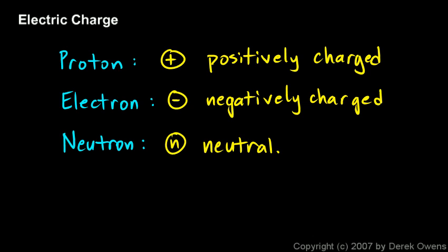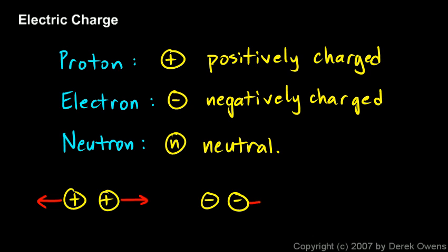You should also know that two objects with the same electric charge — in other words, two objects that are both positive or both negative — will repel each other. If I have two protons, they will exert a force on each other that tends to push them apart. The same happens with two electrons. Those arrows drawn in red represent forces. It's said that like charges repel each other.